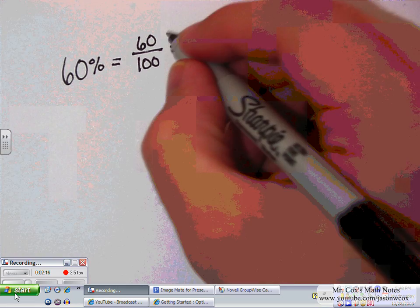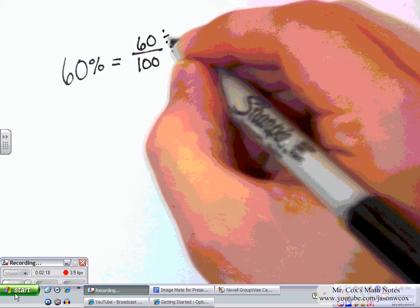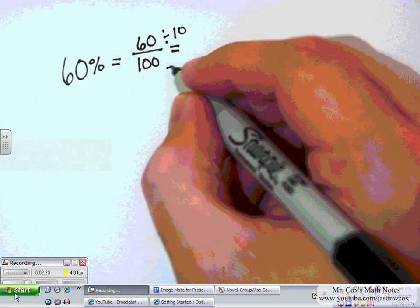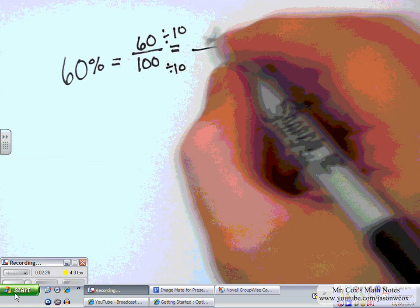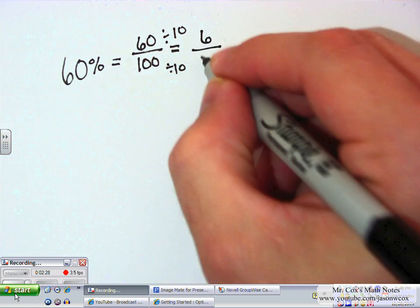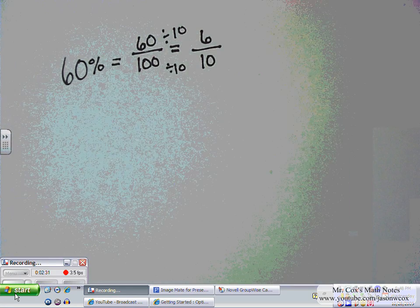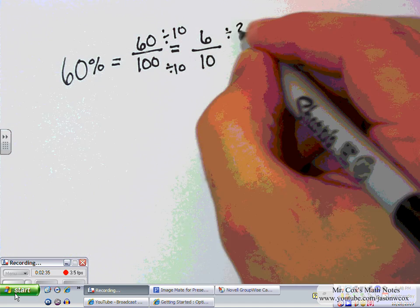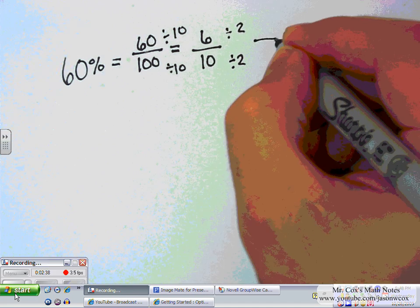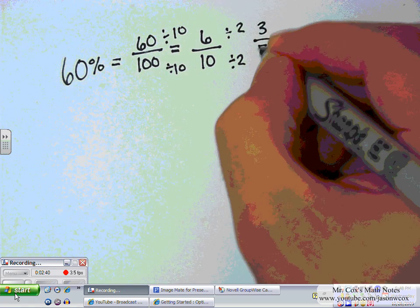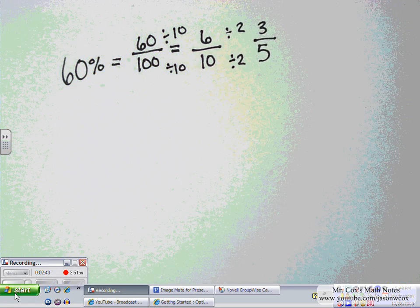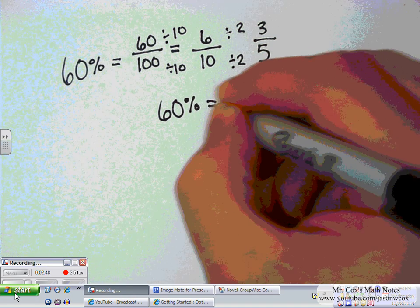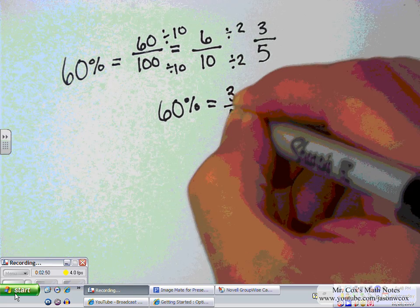Now, all I need to do is reduce. I can divide 60 by 10. I can divide 100 by 10. Well, now I'm left with 6 tenths. It's a lot easier fraction, but it's still not reduced all the way. I can divide both of those by 2. And I would get 3 fifths. It's a much easier fraction to work with. So 60% is equivalent to 3 fifths.